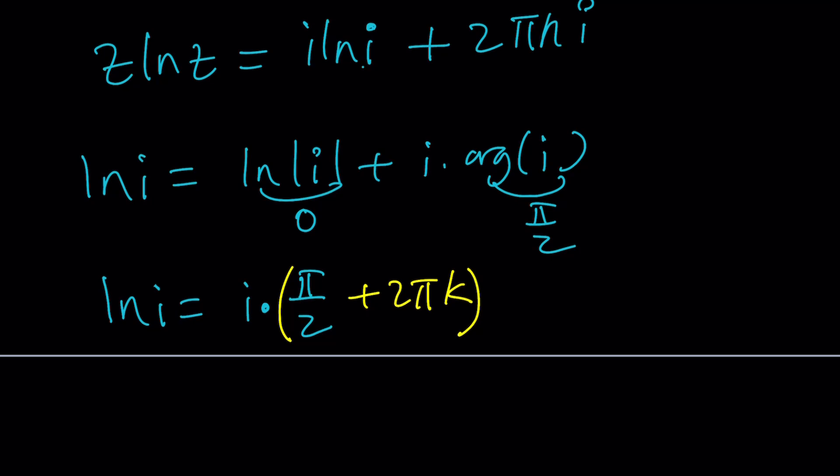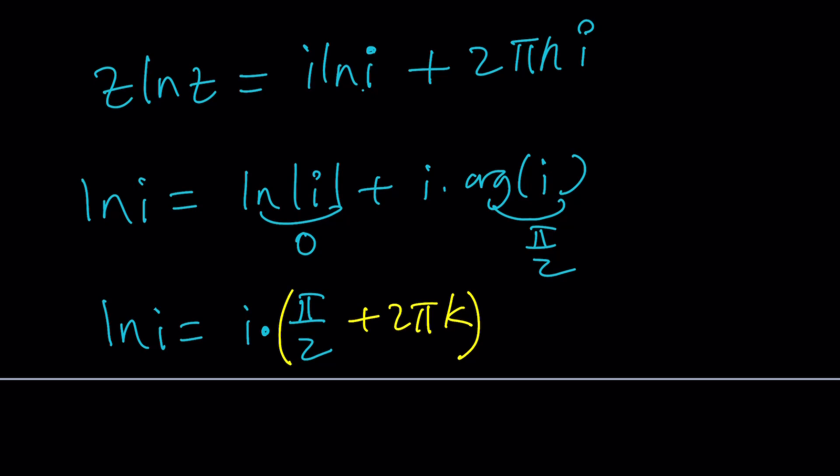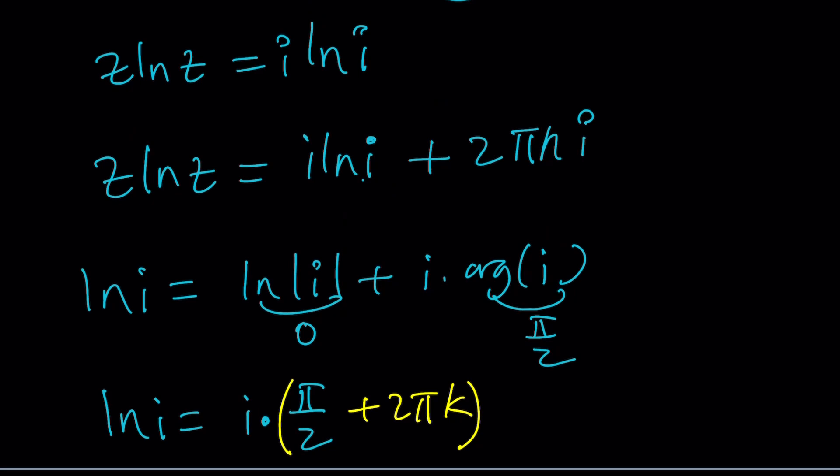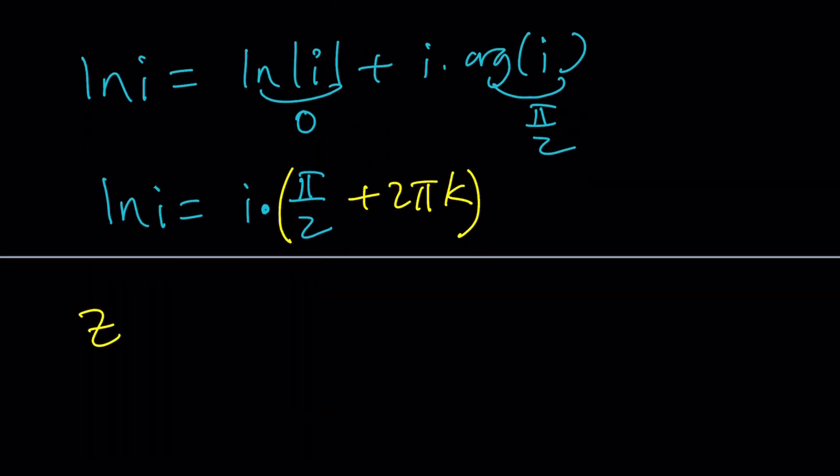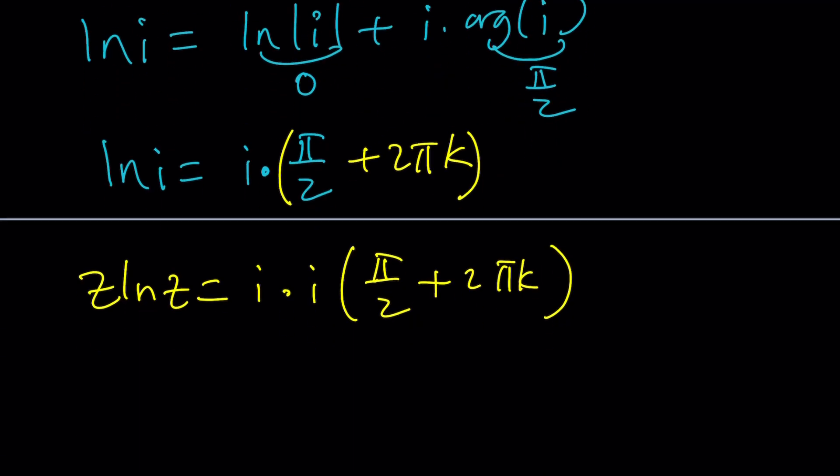And I'm not saying it's an integer multiple, but it's more like an irrational multiple because pi over 2 is irrational. Very irrational and very transcendental. Anyway, that's ln i, and I can go ahead and plug it in here. So we get z ln z equals i times ln i, which is going to be i times pi over 2 plus 2 pi k. And then there's another plus 2 pi n i.